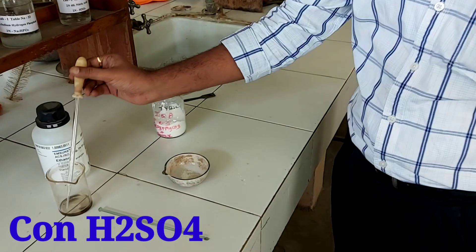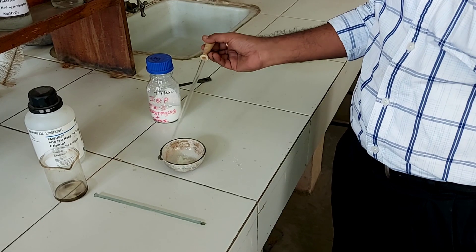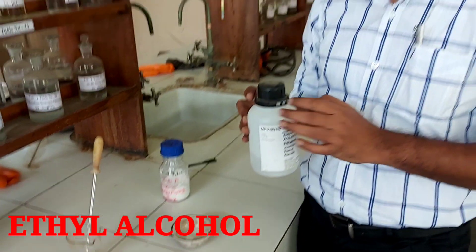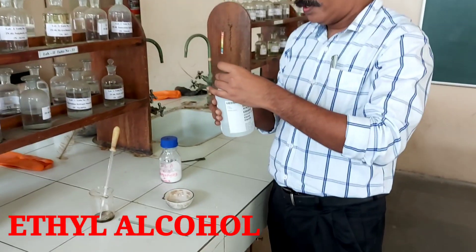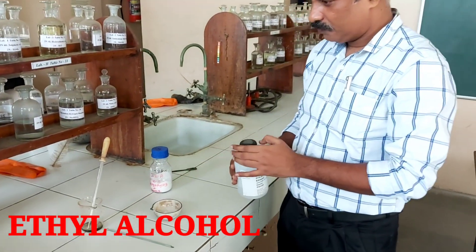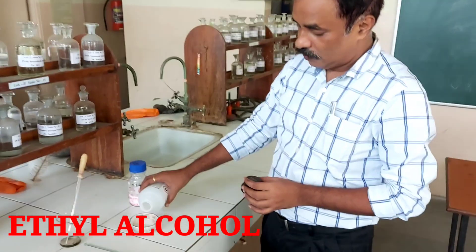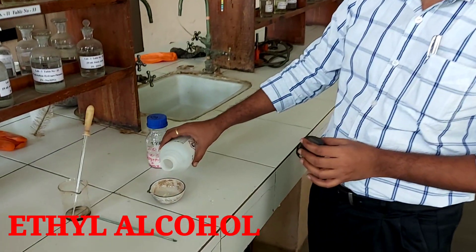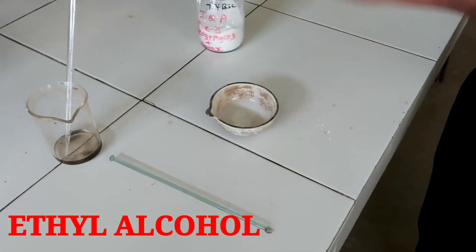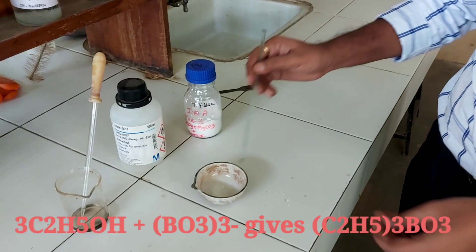A little sulfuric acid is added. Now we have to add ethyl alcohol. You can take methyl alcohol as well. Here it is ethyl alcohol. Now mix it properly and fuse it properly.